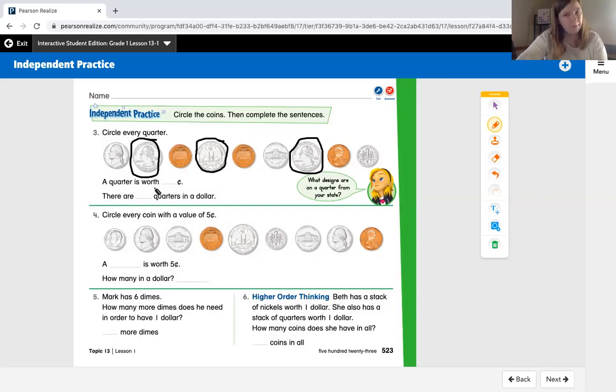How much is a quarter worth? I know that there are four quarters in a dollar and that they are worth 25 cents. A quarter is worth 25 cents. There are blank quarters in a dollar. How many quarters are in a dollar? If you said four quarters are in a dollar, you are right.